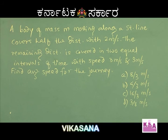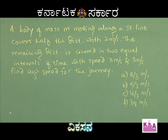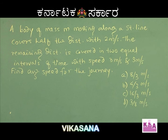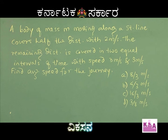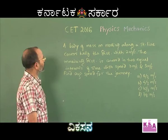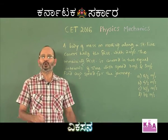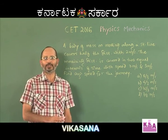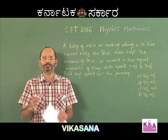Coming to this problem: a body of mass m moving along a straight line covers half the distance with 2 m/s speed, and the remaining distance is covered in 2 equal intervals of time with speeds 3 m/s and 5 m/s. Find the average speed for the whole journey. Options given are: 8/3 m/s, 4/3 m/s, 16/3, and 3/8. What we will do is first divide the whole distance into 2 equal parts — call the first distance s and the second distance also s.